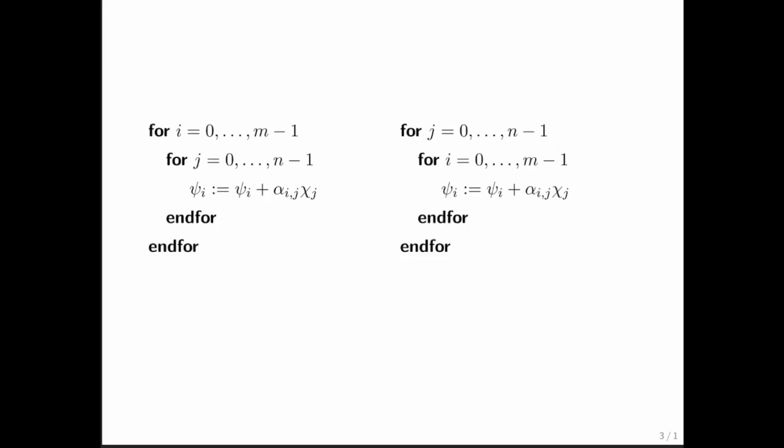Another way you could look at this is, if you look at the algorithm on the left and you look at this inner statement right here, notice that two floating point operations are performed, a multiply and an add. Now, that loop executes n times, and then the outermost loop executes m times. So the total cost of the algorithm on the left is m times n times 2 floating point operations.